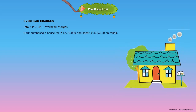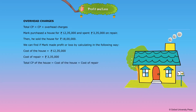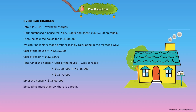Mark purchased a house for Rs. 12,35,000 and spent Rs. 3,35,000 on repair, then sold the house for Rs. 18,00,000. Total cost price = Rs. 12,35,000 + Rs. 3,35,000 = Rs. 15,70,000. Selling price = Rs. 18,00,000. Since SP is more than CP, there is a profit. Profit = SP − CP = Rs. 18,00,000 − Rs. 15,70,000 = Rs. 2,30,000.